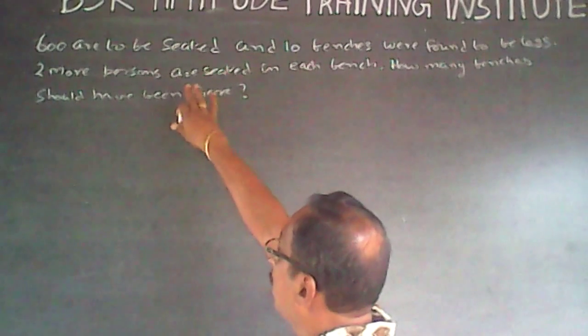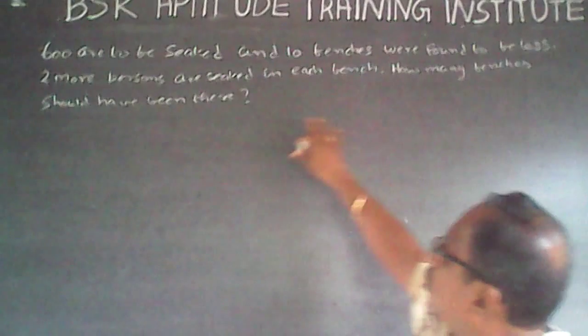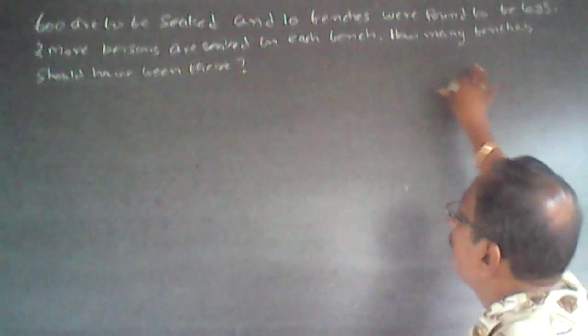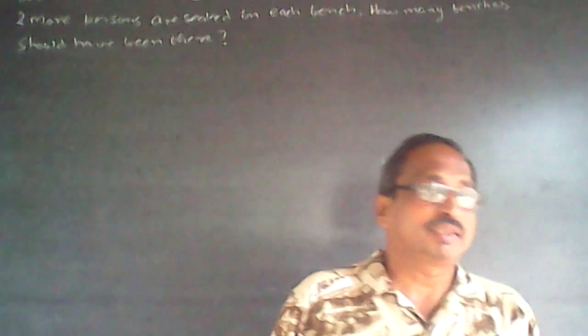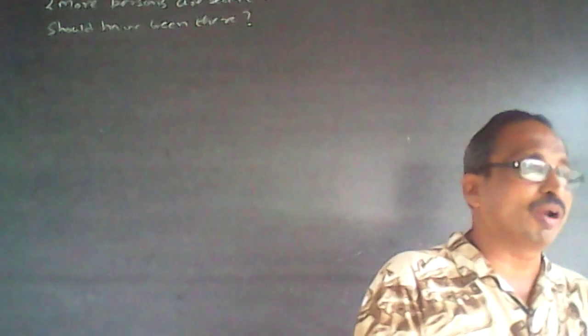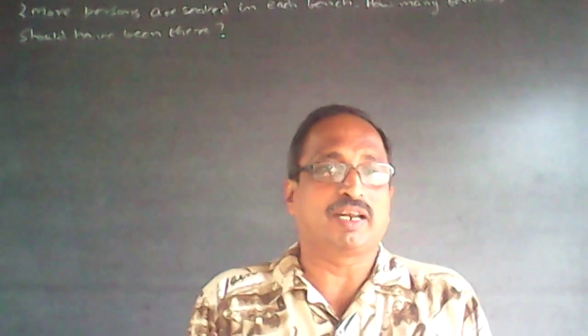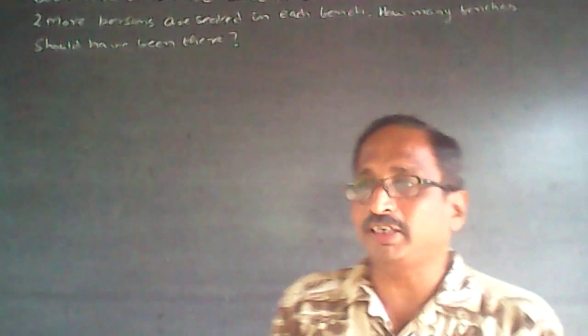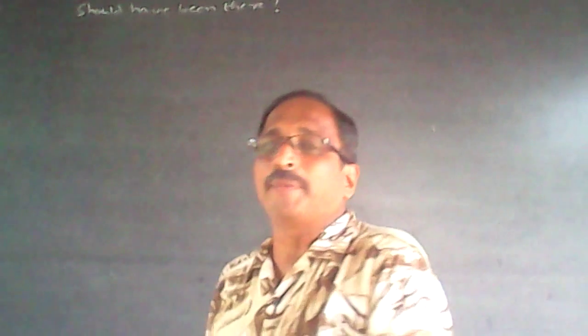The question is: 600 people are to be seated and 10 benches were found to be less, so two more persons are seated in each bench. How many benches should have been there? This is a quantity-based question on equation solving. There should have been some number of benches, but when they realized 10 benches are short, they put two more people in each remaining bench.